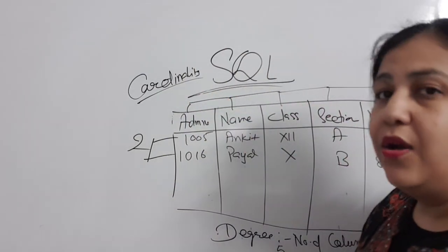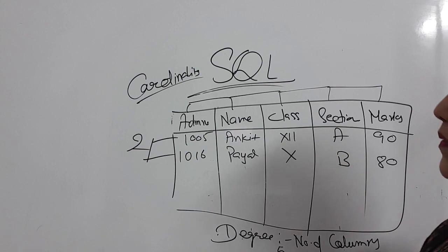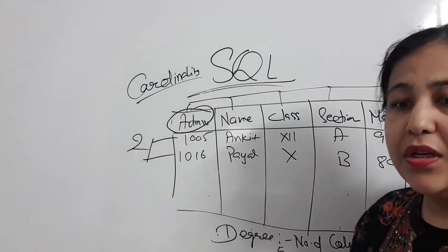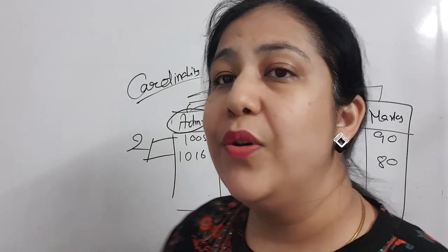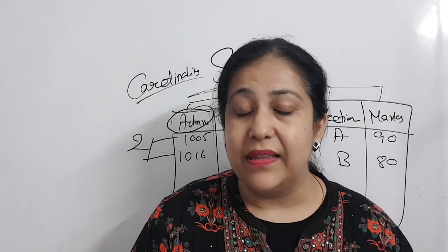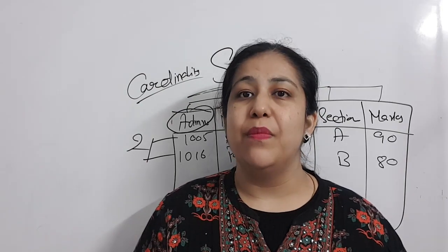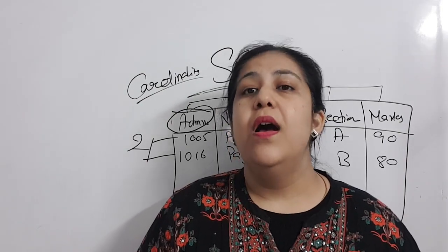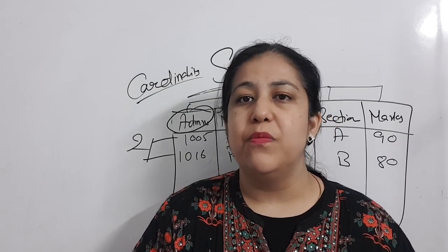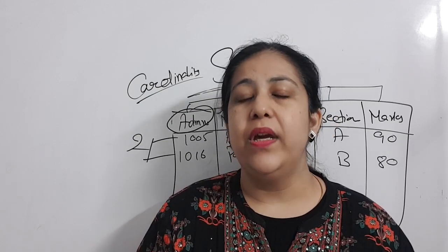Third: which is the primary key in the table? Looking at the columns, the primary key should be the admission number, because the data in it is unique — no student's admission number matches any other student's, and no student can be without an admission number. So if asked to suggest a primary key, the answer should be admission number.